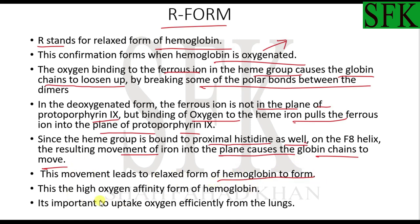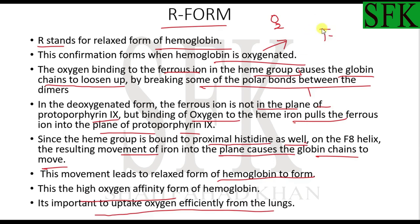This movement leads to the relaxed form of hemoglobin, which is the high oxygen affinity form. This is important for the efficient uptake of oxygen from the lungs. In the lungs, hemoglobin initially arrives in the T conformation. Due to the high partial pressure of oxygen in the alveolar airspace, one of the heme groups becomes oxygenated, shifting hemoglobin into the R form. The R form has greater affinity for oxygen and more readily accepts all four oxygen molecules, allowing hemoglobin to become fully saturated.